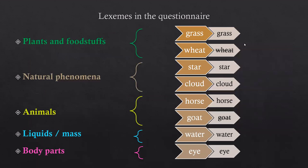I looked into all the lexemes I could find in my data so far. I started by looking at semantic categories: plants and foodstuffs, natural phenomena, animals, liquids and mass, and body parts. My first choices for target lexemes were grass and wheat as plants, star and cloud, horse and goat, water, and eye.